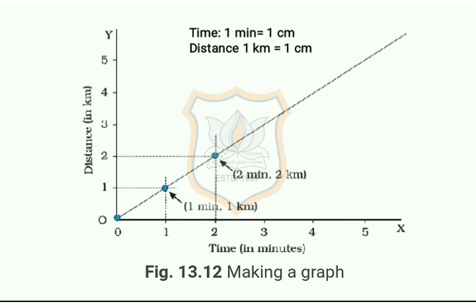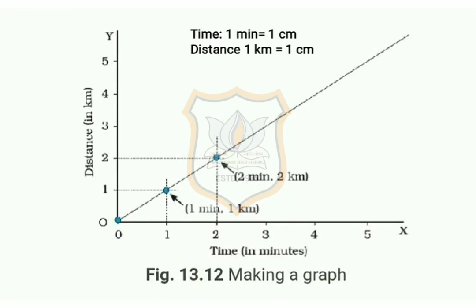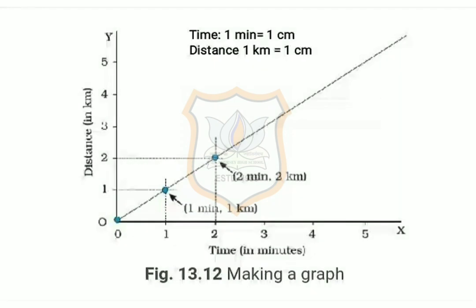Now choose a scale to represent distance and time on the graph. For the motion of the car, the scale could be: time — 1 minute = 1 centimeter, and distance — 1 kilometer = 1 centimeter. Mark the time values 1 minute, 2 minutes, and so on along the X-axis from origin O, and mark distance values 1 kilometer, 2 kilometers, and so on along the Y-axis.